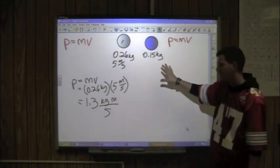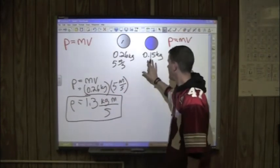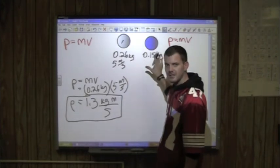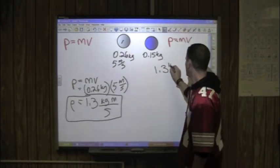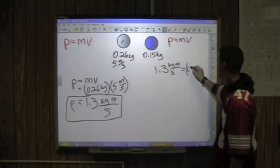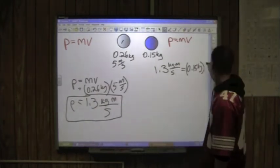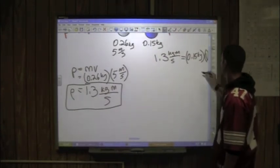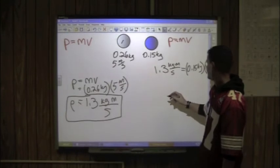Now what about our other ball? We know that this is momentum. We just found this one is momentum. And we know that if momentum is conserved, the second ball would have the same momentum. So we can say that the second ball is 1.3 kilogram meters per second is equal to its mass, 0.15 kilograms times velocity.